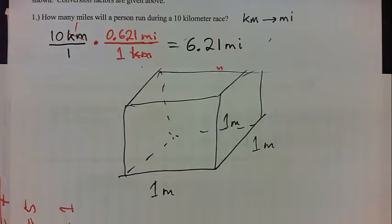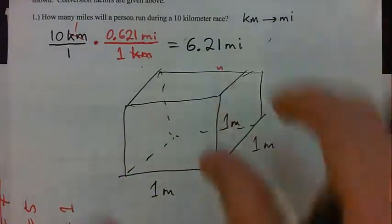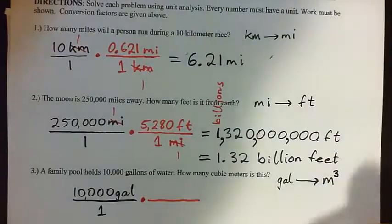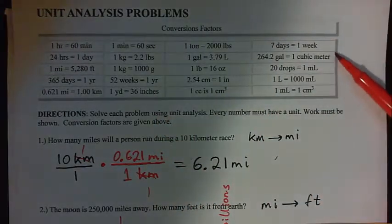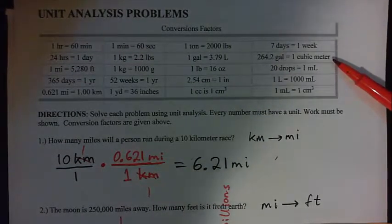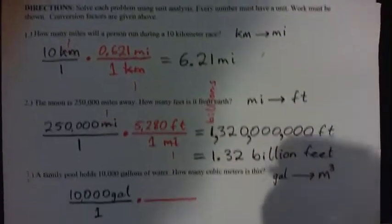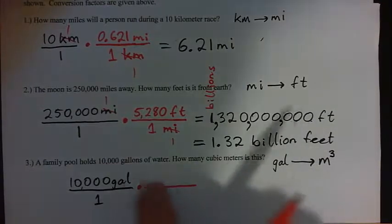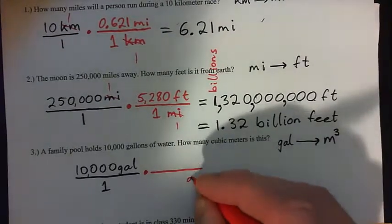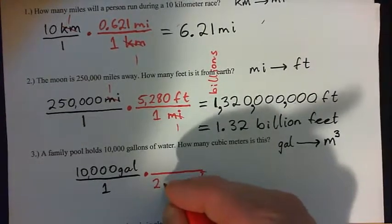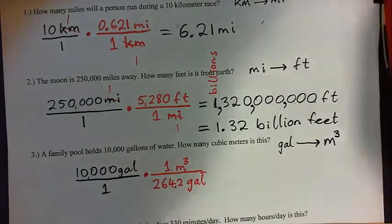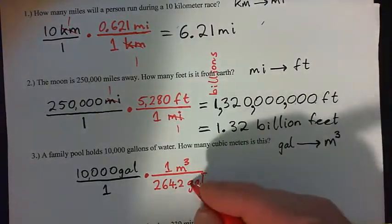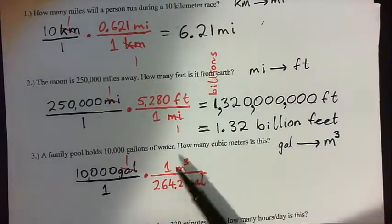From the conversion chart: 264.2 gallons equals 1 cubic meter. We want to go from gallons to cubic meters, so we need gallons on the bottom to cross-cancel. So we write 264.2 gallons on the bottom and 1 cubic meter on top. The gallons cross-cancel and we're left with cubic meters. So it's 10,000 over 264.2, which gives us cubic meters.